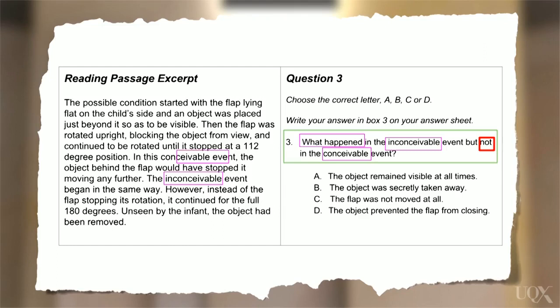So now we look at the text and the keywords tell us that we're in the right place. Next, let's look at the question and the options again. Remember, we want to know what happened in the inconceivable event. Was it A? Did the object remain visible at all times? Think about what this means and how it could be paraphrased.